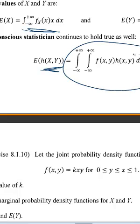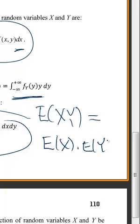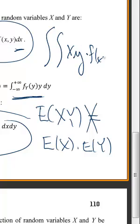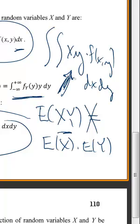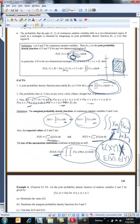Be careful — in the next homework you're going to want to say the expected value of xy equals the expected value of x times the expected value of y. But there's no reason to believe that, and it's not a true statement. You would have to say it's the double integral of xy times f(x,y) integrated over your region of interest. You can only split them if you have independence — otherwise it is not a true statement.